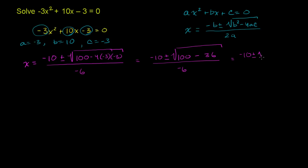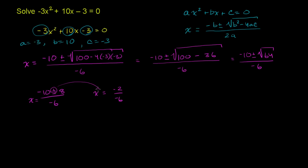So we have negative 10 plus or minus the square root of 64, all of that over negative 6. The principal square root of 64 is 8, but we're taking the positive and negative square root. So this is negative 10 plus or minus 8 over negative 6. If we take the positive version, x equals negative 10 plus 8 is negative 2 over negative 6, and negative 2 over negative 6 is equal to 1 third. If we take the negative square root, negative 10 minus 8 is negative 18 over negative 6, and negative 18 divided by negative 6 is positive 3. So the two roots are positive 1 third and positive 3.